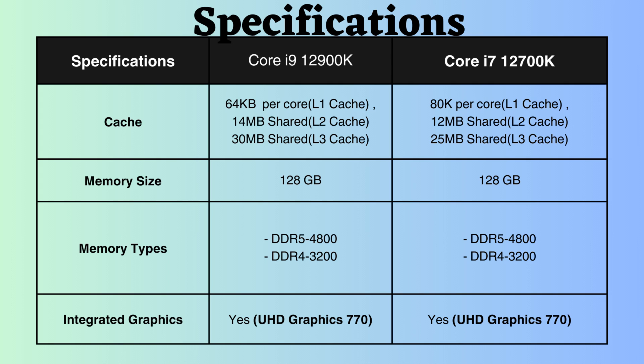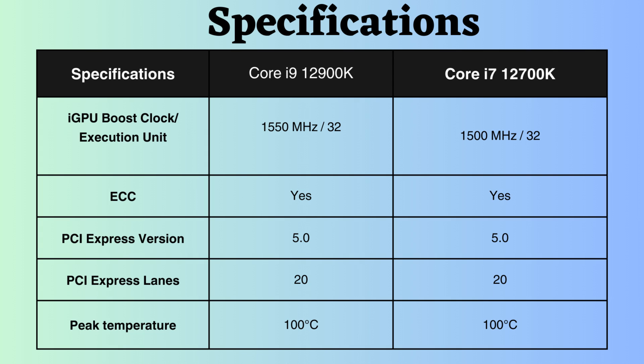They both feature integrated graphics, specifically the UHD Graphics 770. The boost frequency of the integrated graphics differs between the Intel Core i9-12900K, which is 1,550 MHz, and the Core i7-12700K, which is 1,500 MHz. Consequently, the Core i9-12900K is capable of accommodating high-frequency graphics cards, making it advantageous for graphical tasks.